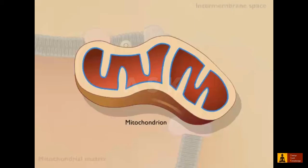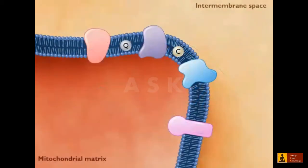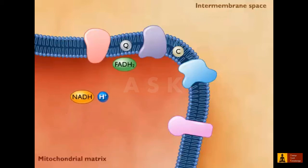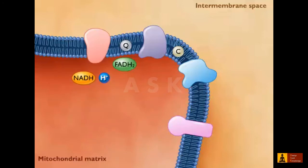In the mitochondrion, the energy stored in NADH is used to generate a proton gradient across the mitochondrial membrane, and the energy of the proton gradient is used to make ATP. When glucose is oxidized during glycolysis and the Krebs cycle, the coenzymes NAD and FAD are reduced to NADH and FADH2.